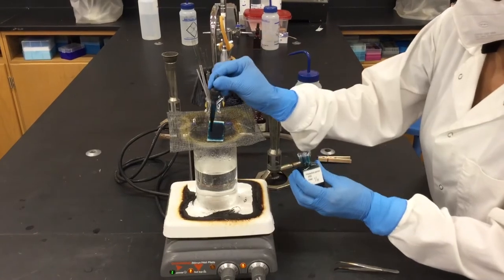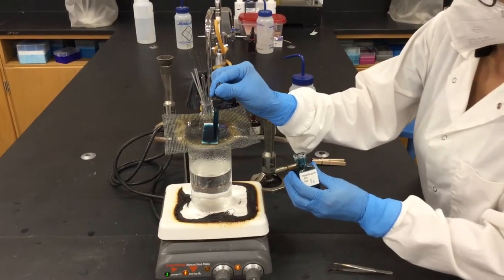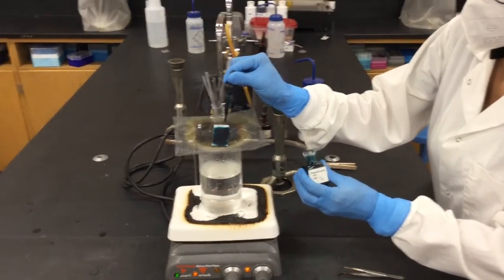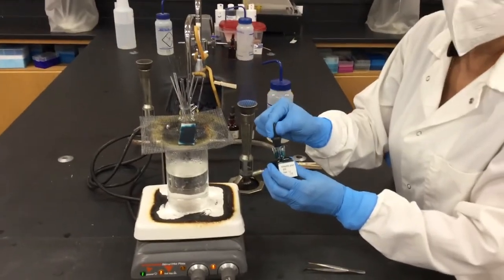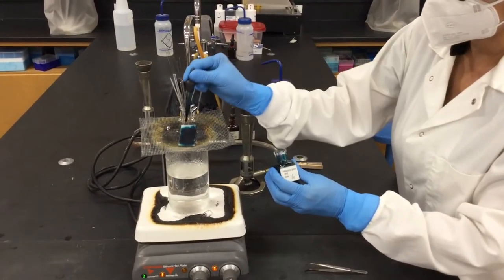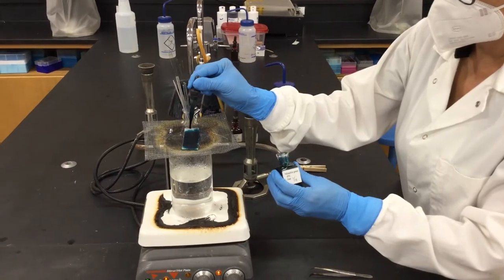Now the endospores are dormant forms of bacteria that the bacteria uses to survive when they are in harsh conditions like low water, low nutrients, radiation, high temperature.